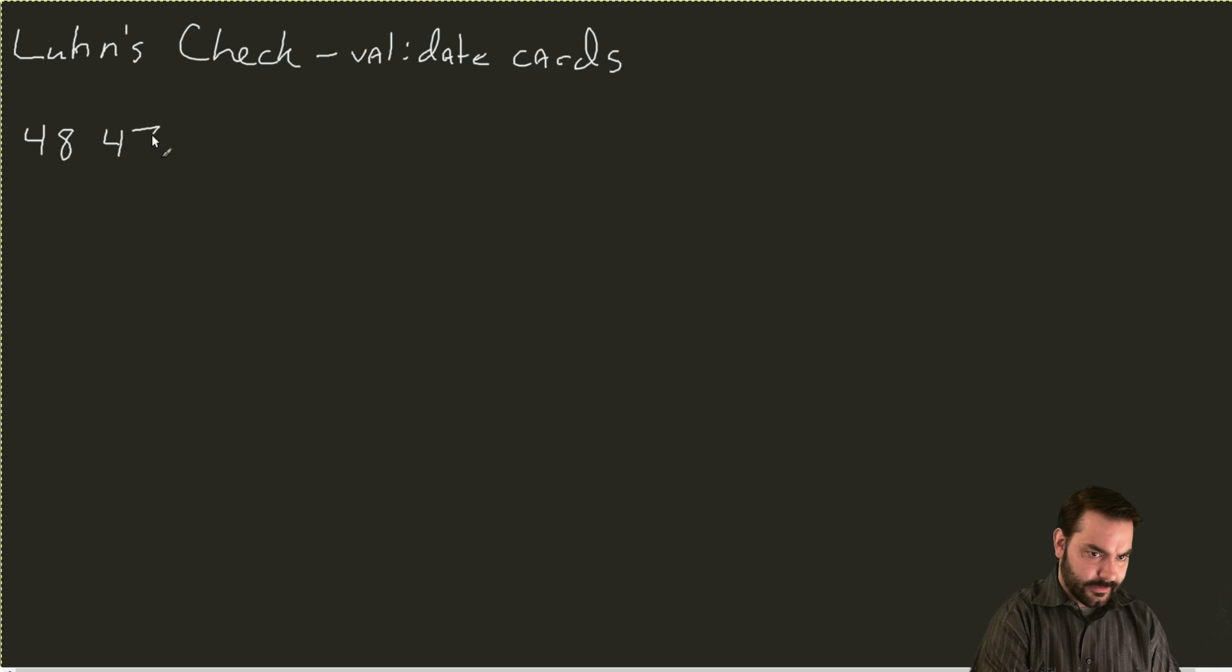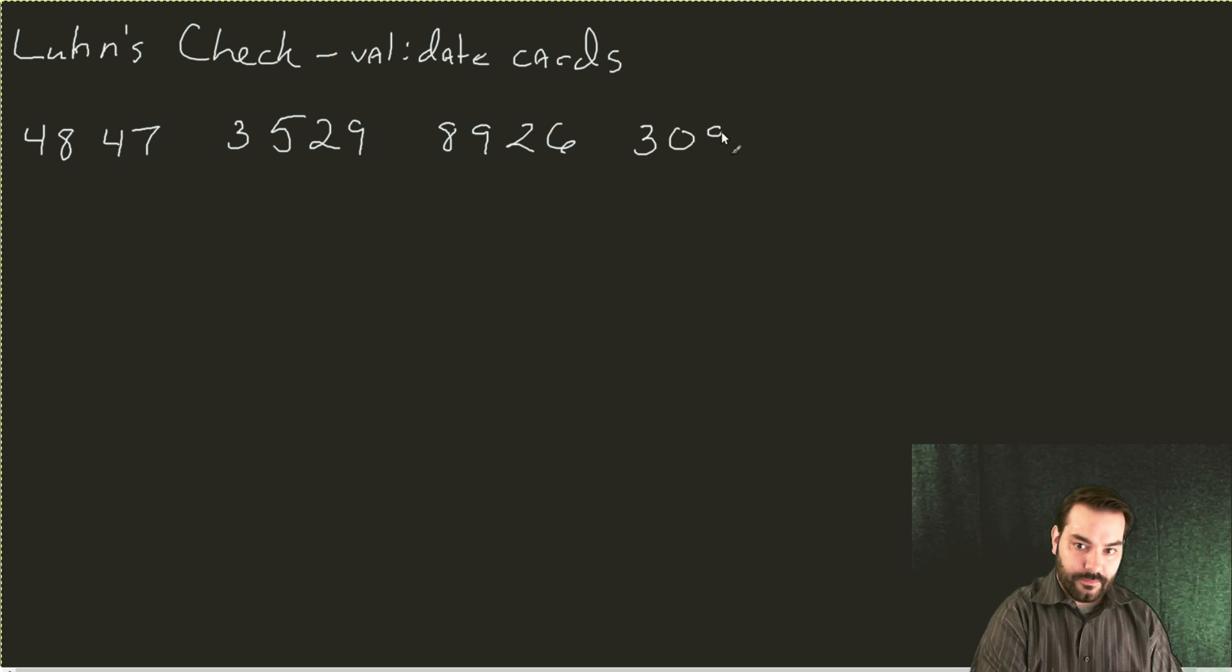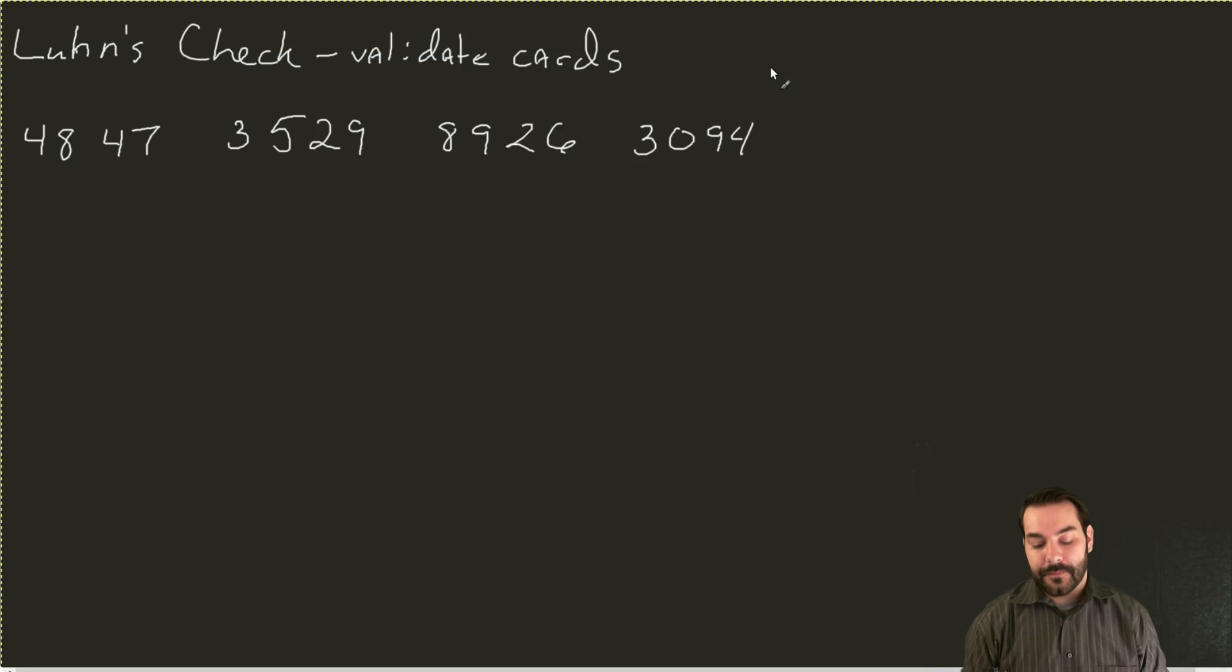So I'm going to write it out here. 4, 8, skip ahead. I've got 3, 5, 2, 9, 8, 9, 2, 6, 3, 0, 4, 9, 4. So how does the Luhn check work?